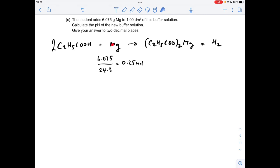The magnesium is going to react with the propanoic acid, and it's going to take some of the propanoic acid out of the buffer. And you'll see from the equation, it's actually going to generate some of the propanoate ions, so it's going to put some propanoate ions into the buffer.